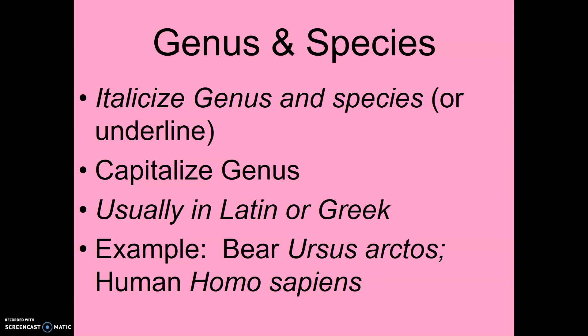It's important when we write this, we write it the correct way. When you're writing the genus and species, it needs to be italicized — sometimes we'll have you underline it. You capitalize the genus and leave the species uncapitalized, as you can see with uppercase and lowercase here. It's usually in Latin or Greek. For example, bear is Ursus arctos — notice the U is capital and A is not, and it's italicized. And human is Homo sapiens.